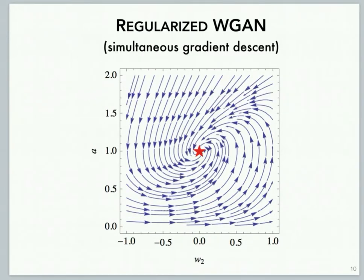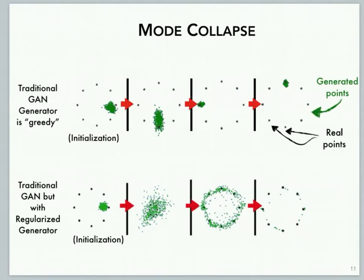But more interestingly, based on our analysis, we propose a regularizer for the Wasserstein GAN so as to ensure local exponential stability, even when the discriminator and generator are updated equally often. In fact, we show that our regularizer helps even the original GAN system in addressing a common failure event called mode collapse.